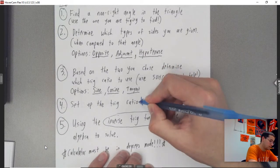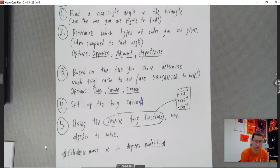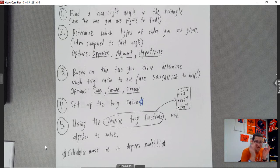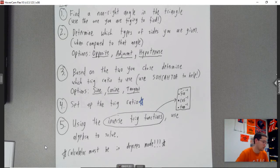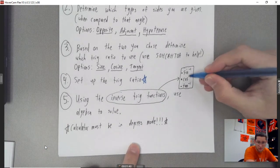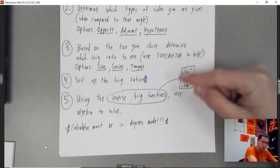Step four: set up the trig ratio. Too often people neglect this step and try to do everything in one step. You need to understand the baseline first. It's always sine, cosine, or tangent of an angle equals something over something. Step five: using the inverse trig functions, use algebra to solve. That's the big new difference here — it helps us find angles. Your calculator has to be in degrees mode.